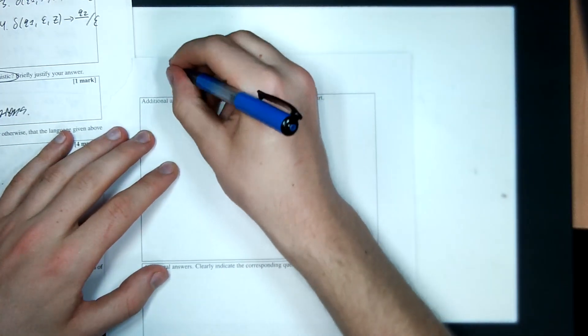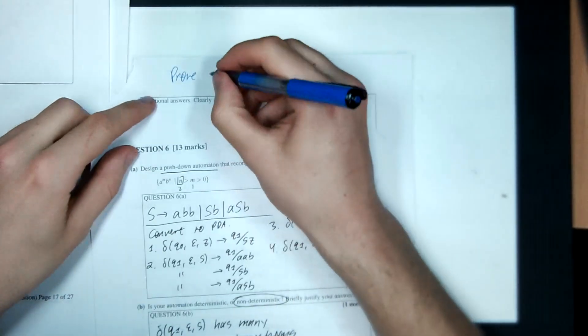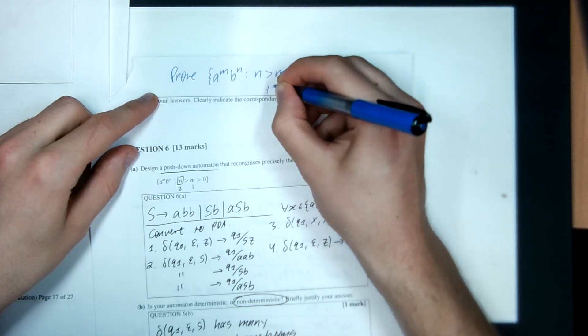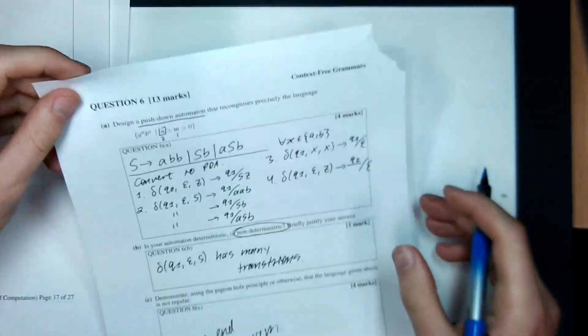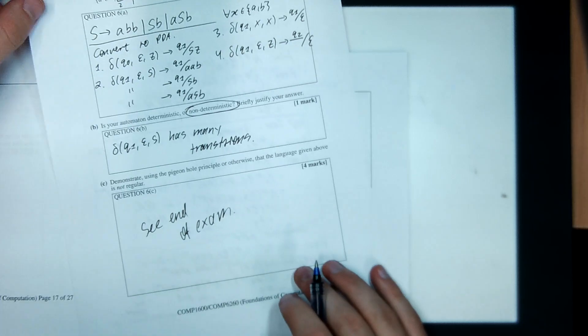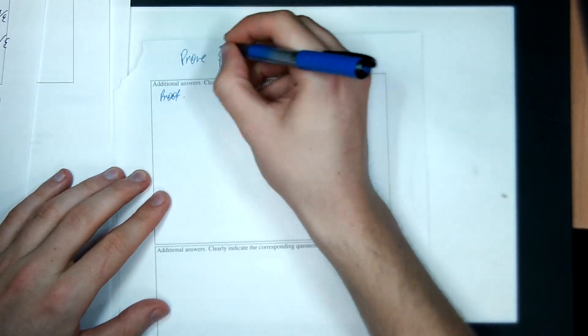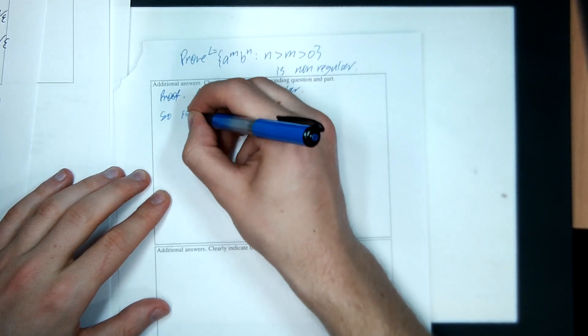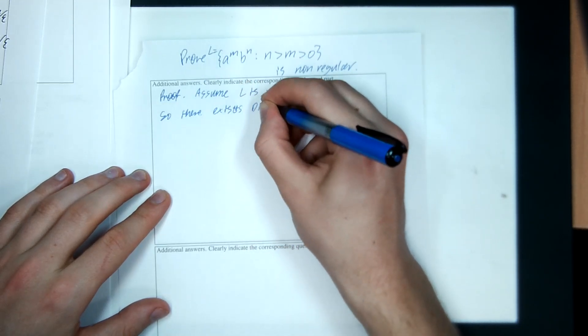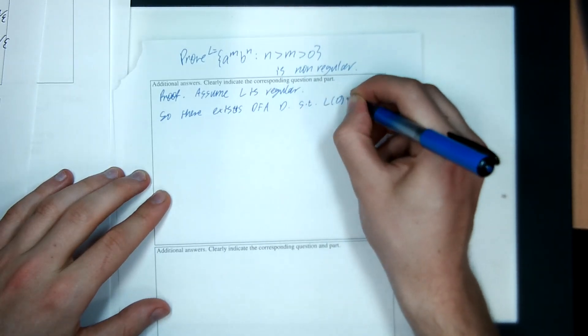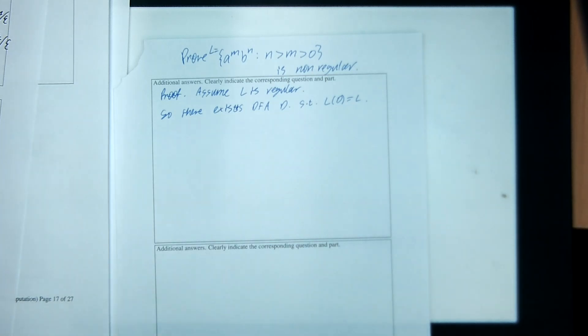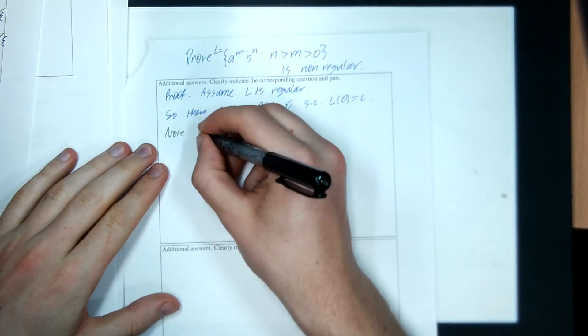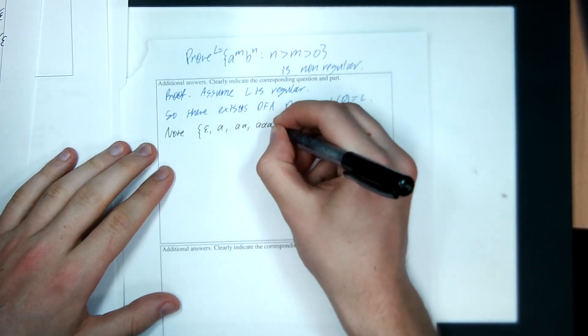So we want to prove the language, what was the language again? It was A to the M, B to the N, more N's than M's, and more M's than 0, is non-regular. In reality, if you're doing the exam, skip this question and come back to it at the end, because this is a long one. It's only worth four marks. Okay, so here's the proof. I'm going to call this language L. We assume L is regular. Okay, so there exists some DFA, I'll call it D, such that the language that D recognizes is precisely this language here, L. Okay, well, how do I make this fail? It looks like if I pump up the A's, I can break this condition, right? So I'm going to say, note that this set is infinitely large. Epsilon A, double A, triple A, blah, blah, blah, is infinite.